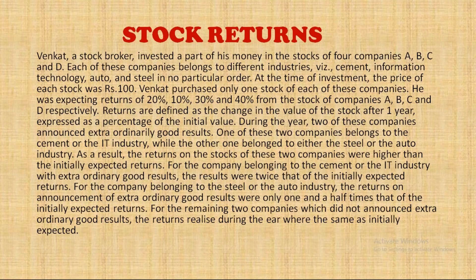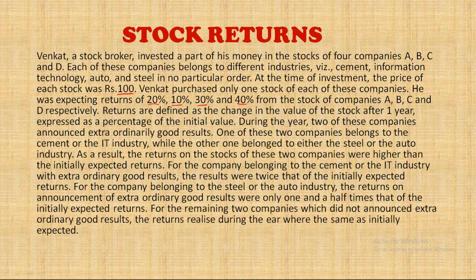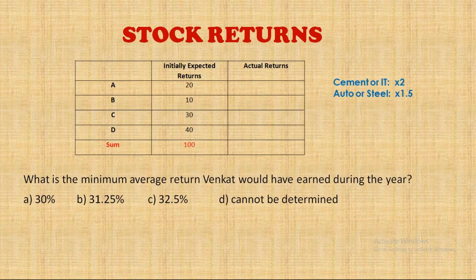The story is that there are four companies whose shares are all rated the same at the time of investment. The order of expected returns is given as 20, 10, 30, and 40. One of the companies actually gave double the expected returns, and one gave one and a half times the expected return. One of the two industries — cement or IT — gave double the expected returns, and the one which gave 1.5 times belongs to auto or steel.